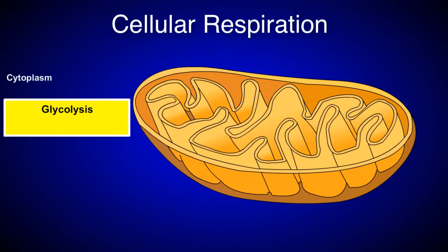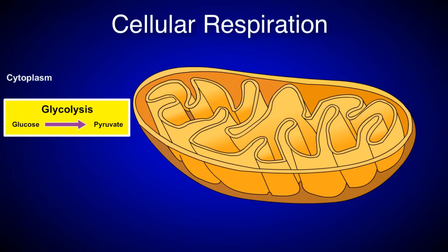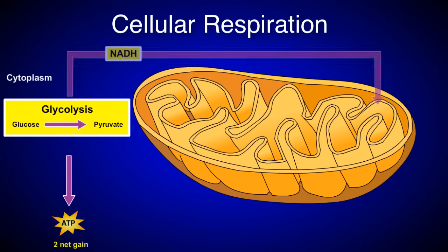The first stage, glycolysis, occurs in the cytoplasm outside of the mitochondria. During glycolysis, enzymes break down glucose into two molecules of pyruvate. During this process, two ATP are produced, and NADH is released to be used in a later step of cellular respiration.